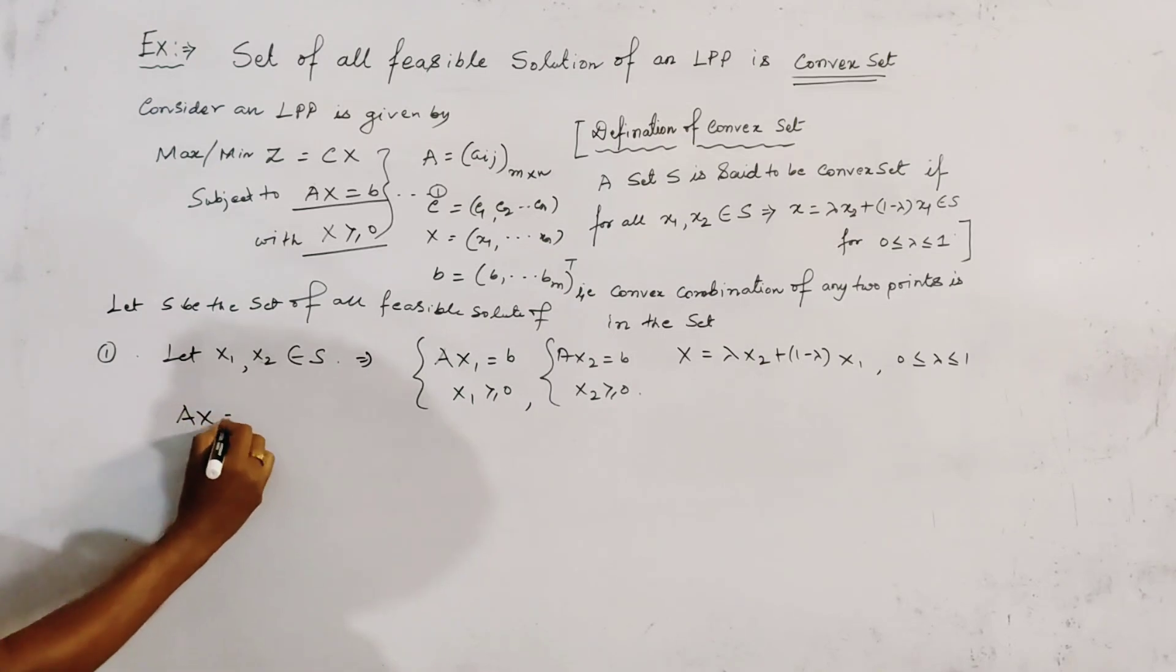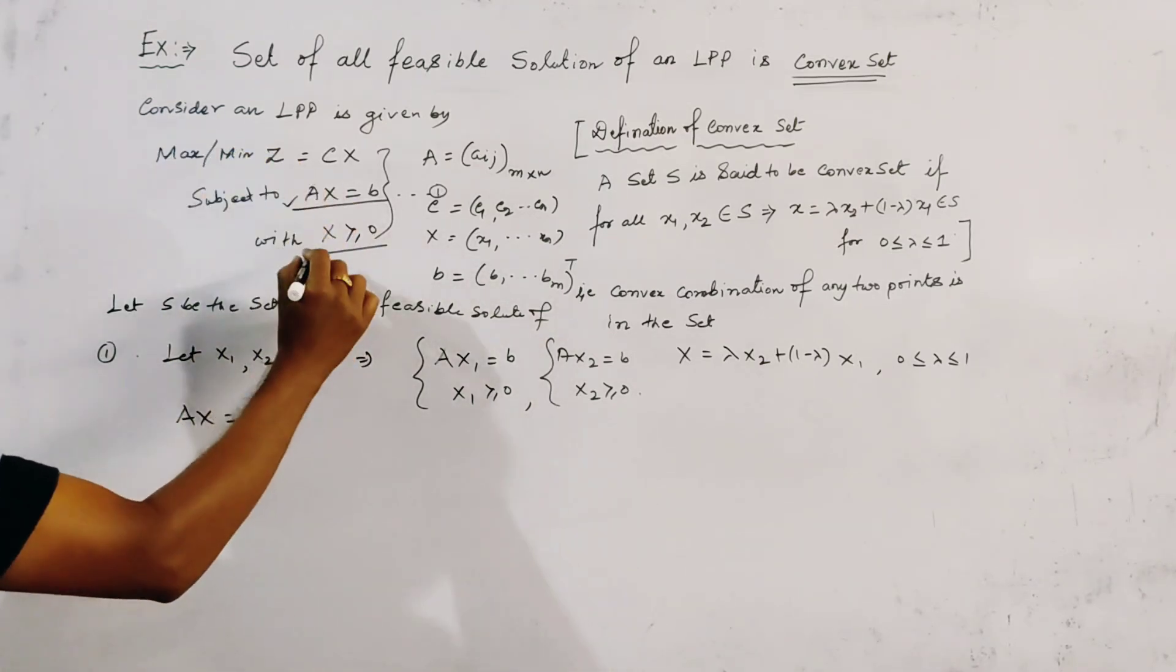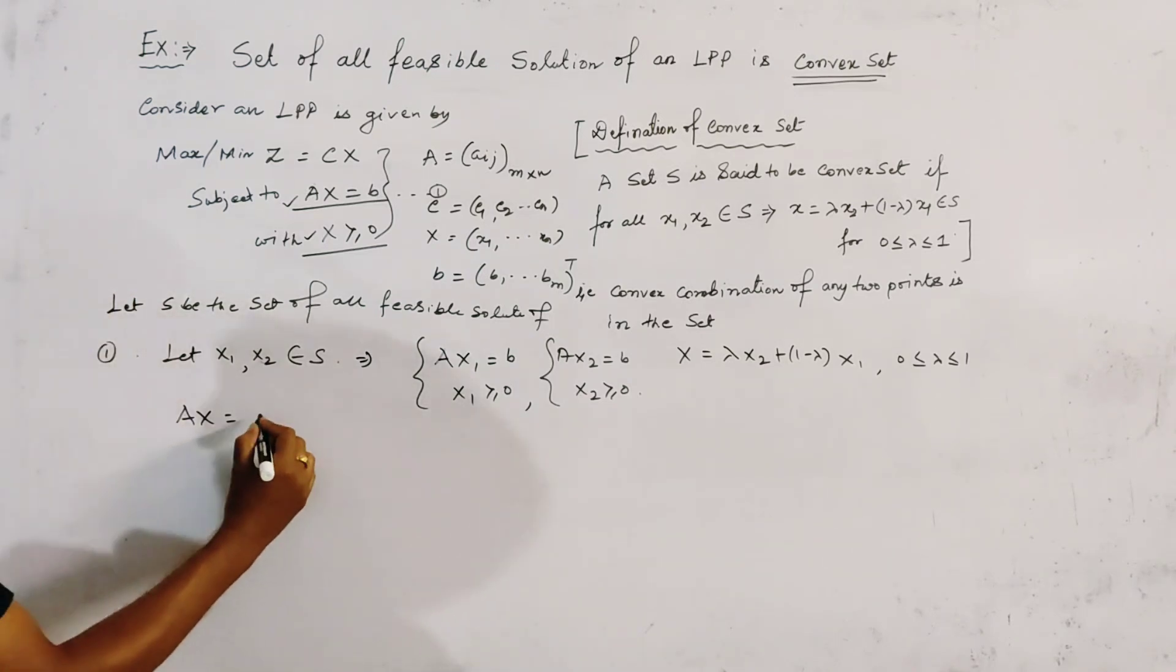Now, AX, we prove, one by one, we first prove this condition, then we prove this one set. AX, this is equal to A,